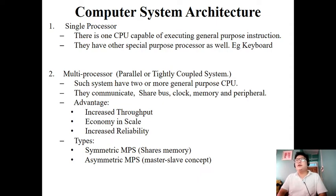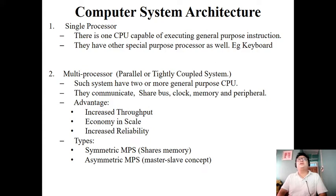Based on the architecture, there are two different kinds of computer systems: single processor and multiprocessor. In the case of a single processor, there is only one CPU in the computer system, which has the ability to execute one general-purpose instruction. In a single processor system, there is a limitation that it can execute only one instruction at a time.